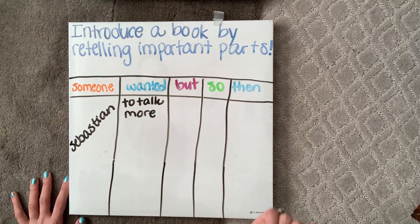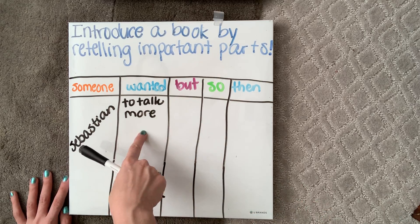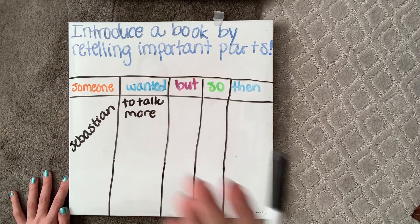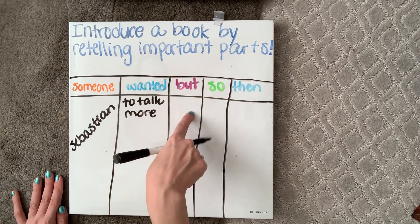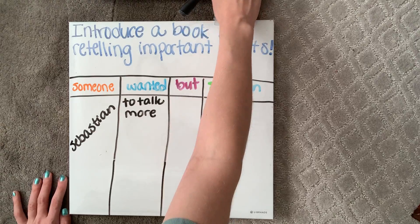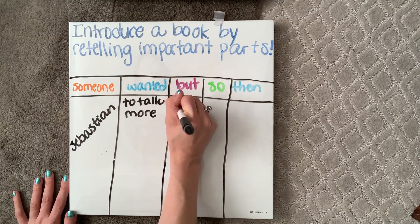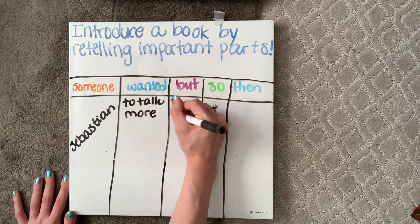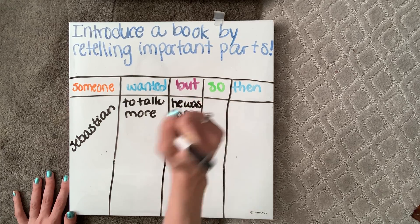Next we have but. This usually signals our problem — so why can the character not get what they want? What's that problem? Our want can't happen because of our problem. So our problem was Sebastian was too shy. So I'm going to write 'he was too shy.'